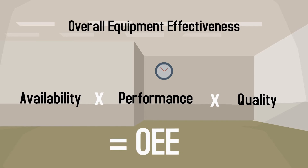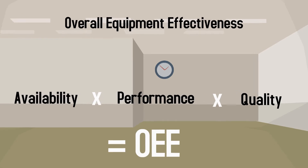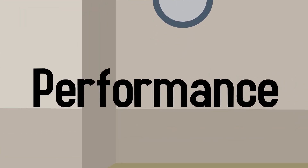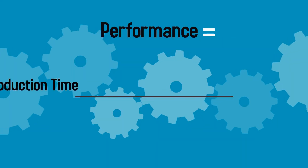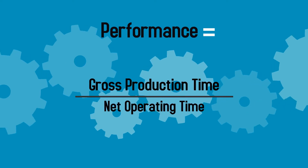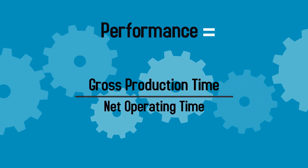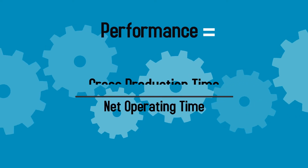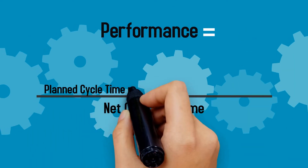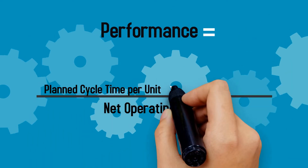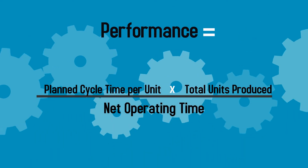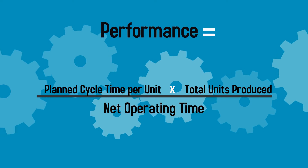In this video, we will be focusing on how to calculate performance. The performance factor can be calculated by dividing gross production time by net operating time. Gross production time is defined as planned cycle time per unit times the total number of units produced.